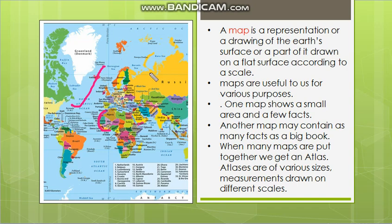So the distance on the map and the real distance are related by the scale. For example, if the scale is 1 cm = 100 km, and a measured distance on the map is 8 cm, that equals 800 km in reality. Similarly, if the scale is 10 cm = 100 km, then 10 cm on the map represents 100 km. The map is drawn according to the scale.